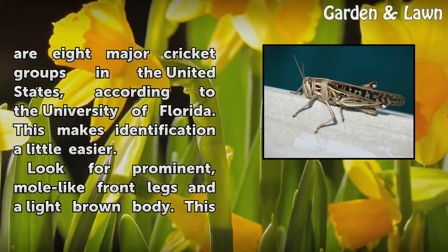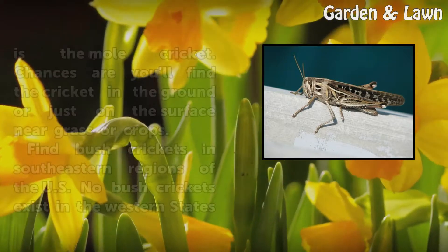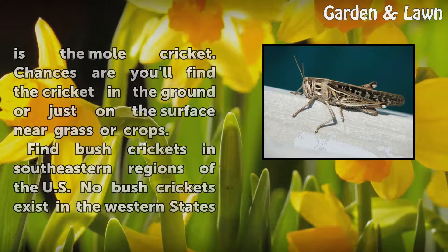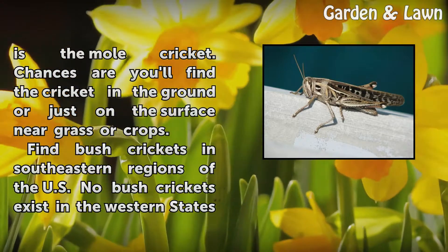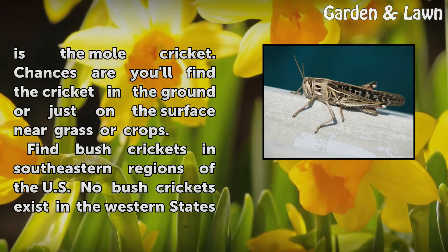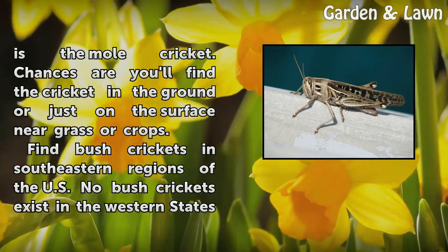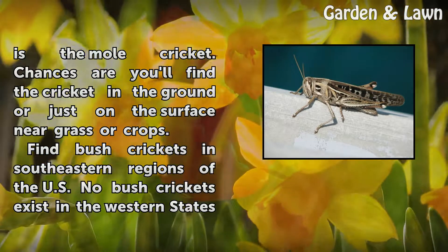Look for prominent, mole-like front legs and a light brown body — this is the mole cricket. Chances are you'll find the cricket in the ground or just on the surface near grass or crops.